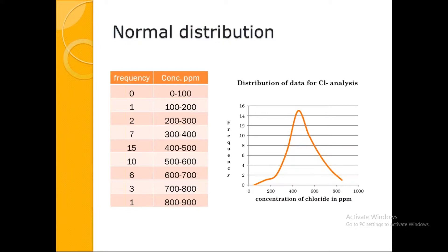Here is an example — chloride analysis. Many chemists performed this analysis. Plotting concentration of chloride in ppm on the x-axis versus frequency, you can see that 15 chemists obtained concentrations in the range of 400 to 500 ppm. The average of all repeated observations turns out to be between 400 and 500 ppm. All chemical experiments we perform in the lab day-to-day follow normal distribution — giving a good bell-shaped curve.